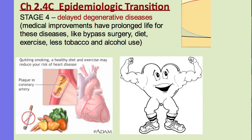Medical improvements in stage 4 have prolonged life — for example, bypass surgery can clean out or bypass clogged arteries so the heart continues pumping healthily after a heart attack. We know that diet and exercise reduce the risk of heart attacks and diabetes, that smoking causes lung cancer, and that excessive alcohol damages the liver. Stage 4 delays degenerative and human-created diseases through knowledge and medical improvements, just as stage 2 used medical improvements to solve the infectious diseases of stage 1.